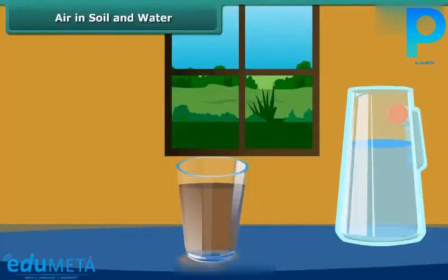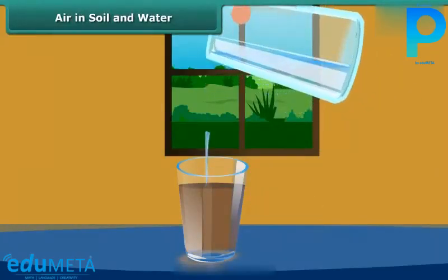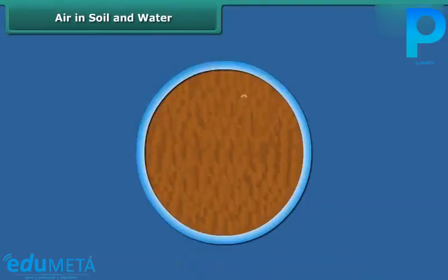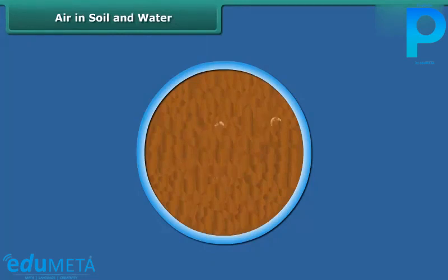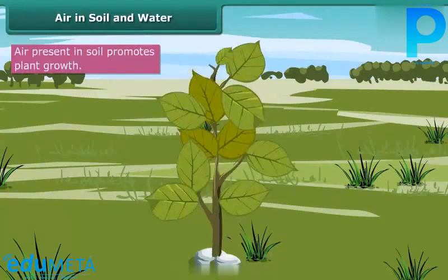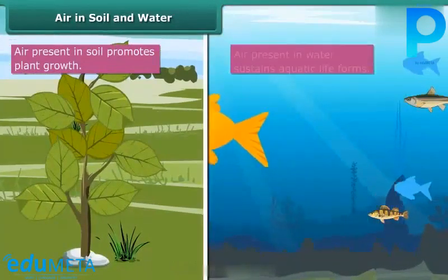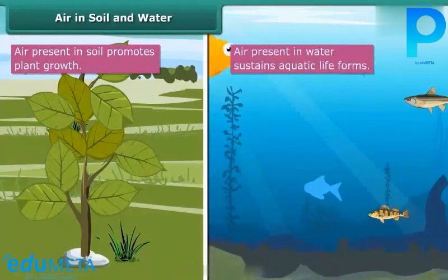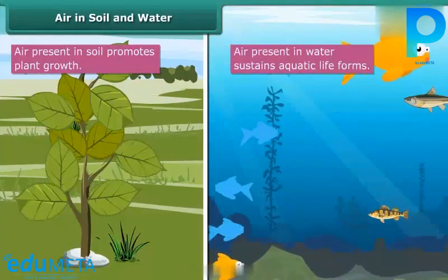Take some soil in a glass and add water to it slowly. Do you see bubbles forming in the soil? Soil contains air between its particles. When water is added to soil, air is replaced by water, and as a result, bubbles are formed. Air present in soil promotes plant growth as well. Air is also present in water, and it helps fish and other aquatic life forms survive in water.